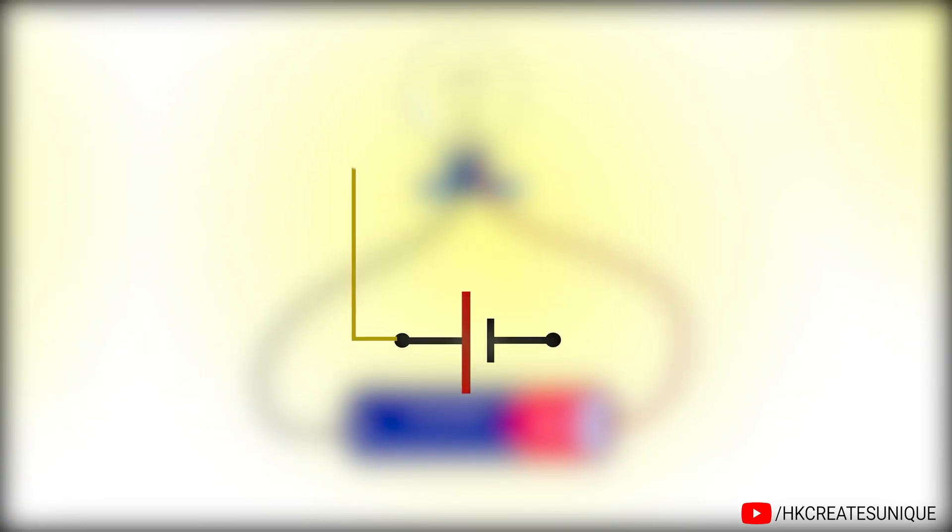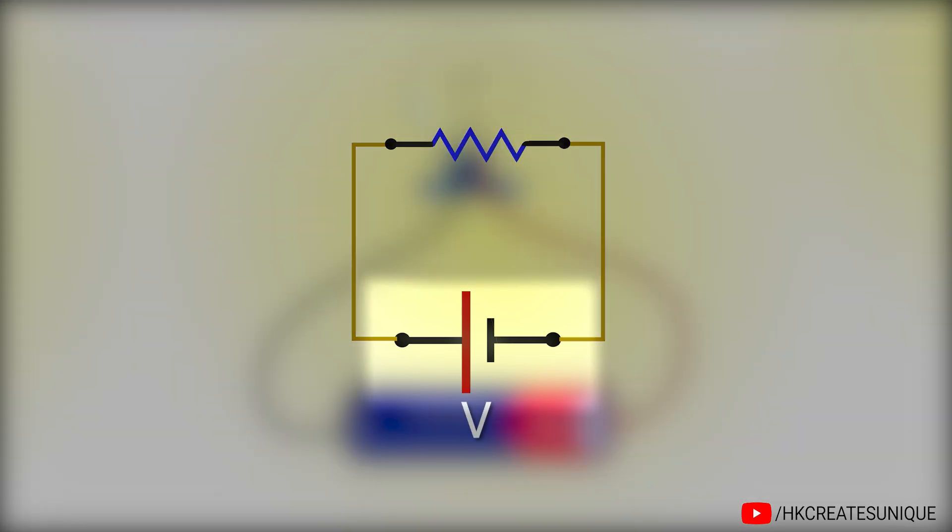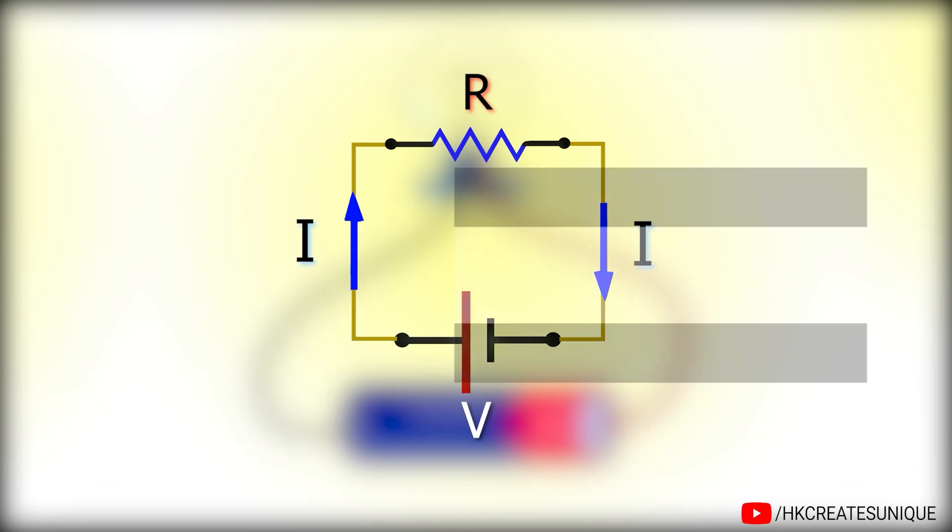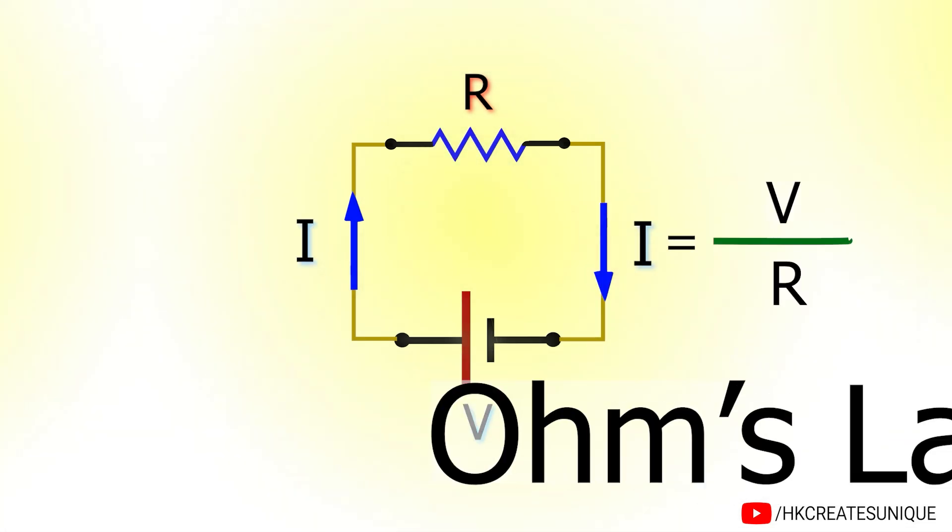This is because when a cell is connected across a resistive load, the voltage of the cell being V and resistance R, current flow will be unidirectional which equals V divided by R. This is Ohm's law.